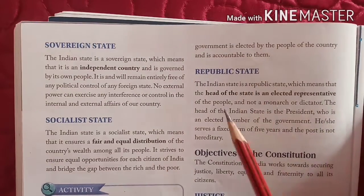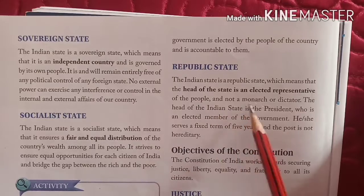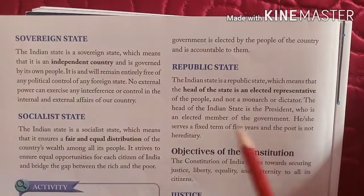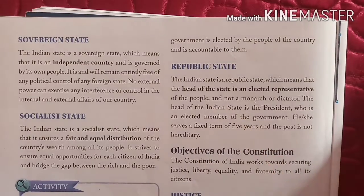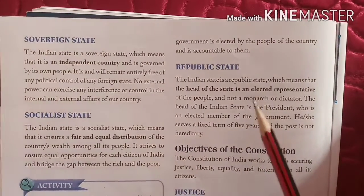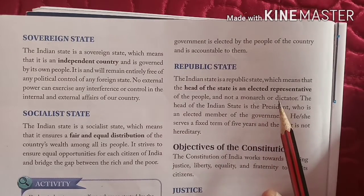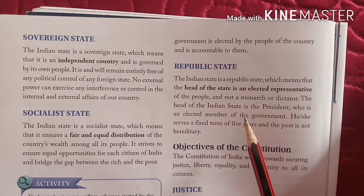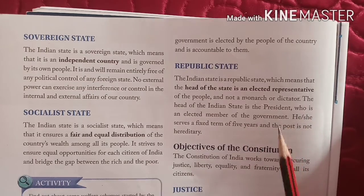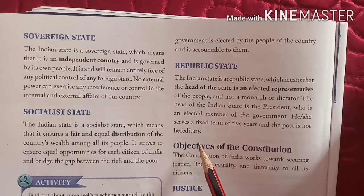The Indian state is a republic state, which means that the head of the state is an elected representative of the people and not a monarch or dictator. The head of the Indian state is a President who serves a fixed term of five years, and the post is not hereditary — it is elected every five years.